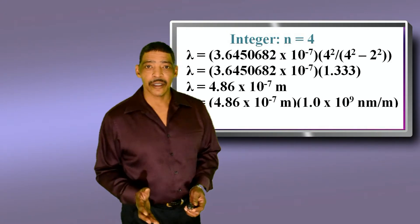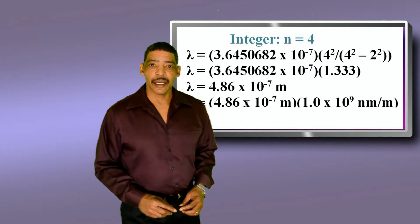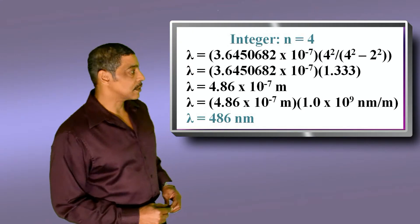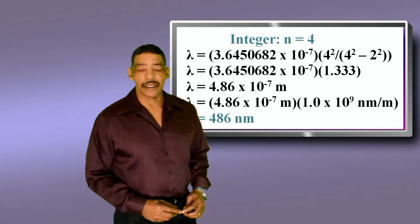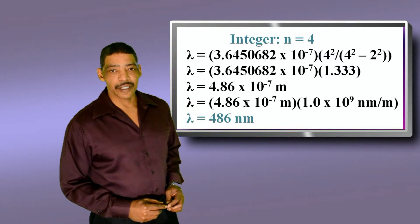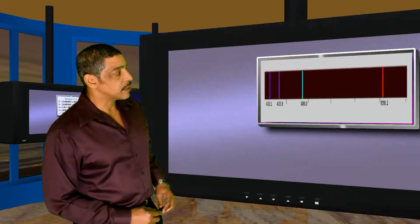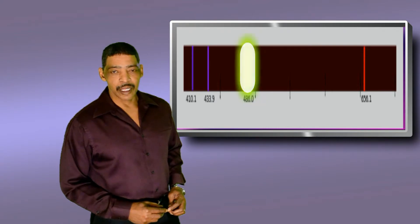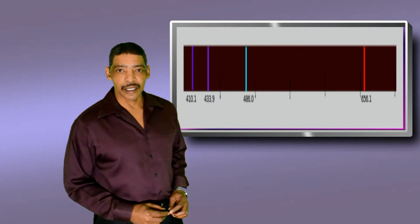And of course, to convert meters to nanometers, we multiply by 1.0 times 10 to the 9 nanometers per meter. This will equal a wavelength of 486 nanometers. This wavelength represents the cyan or greenish-blue line found in hydrogen's bright line spectrum.